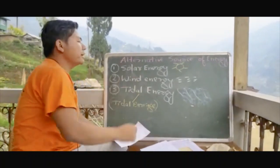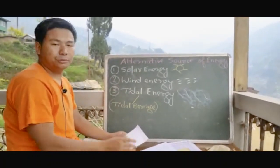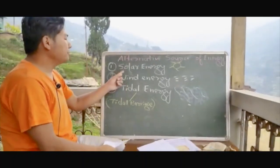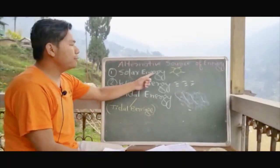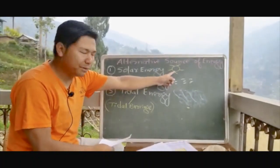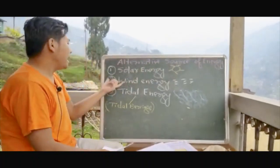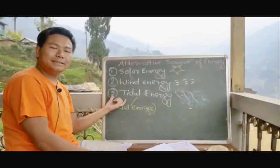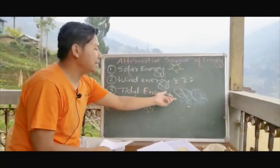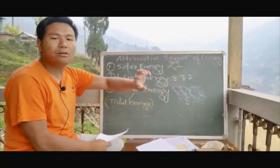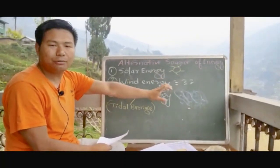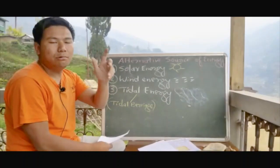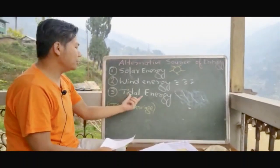Here are the alternative sources of energy. Today we are going to discuss three: number one, solar energy, which we get from the sun; number two, wind energy, which is related to wind; and number three, tidal energy, which is related to sea water and is mostly driven by the gravitational effect of the Earth, Moon, and Sun.